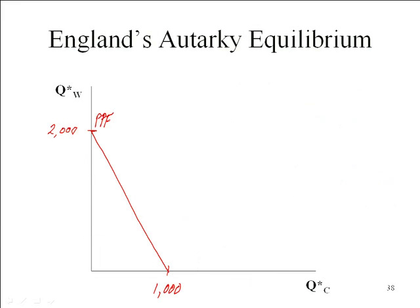Remember, we made an assumption earlier — something like assumption 6 — that country indifference or demand was homothetic, which means that at the same relative prices, consumers in both countries will consume the same relative quantities. That is, their level of income doesn't matter. The price being high for somebody doesn't change the relative quantity you consume, only the relative prices.